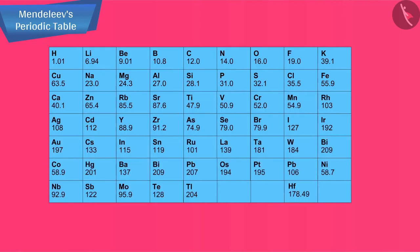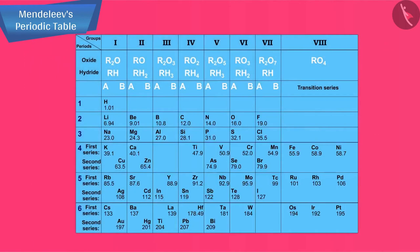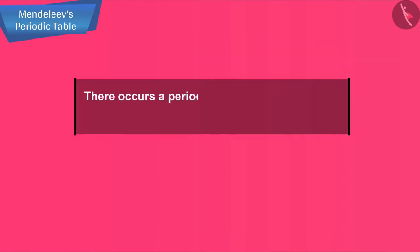He then took 63 cards and on each card he wrote down the properties of one element. He sorted out the elements with similar properties and pinned the cards together on a wall. He observed that most of the elements got a place in a periodic table and were arranged in the order of their increasing atomic masses. It was also observed that there occurs a periodic recurrence of elements with similar physical and chemical properties.